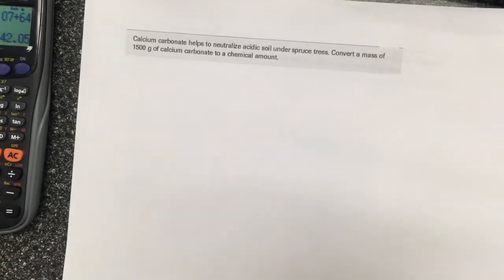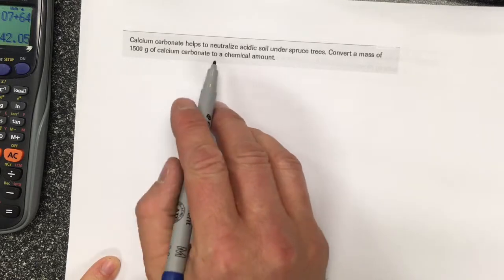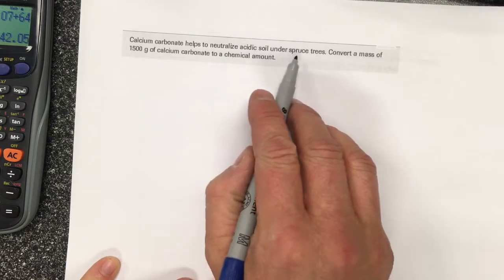In this video, we're going to explain how you can convert between mass and chemical amount, and then chemical amount and mass. In this question, calcium carbonate helps to neutralize acidic soil under spruce trees.